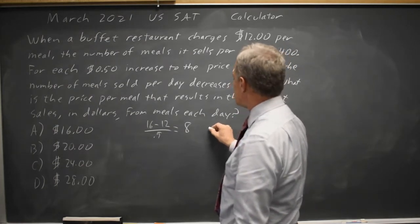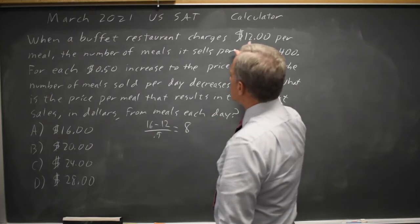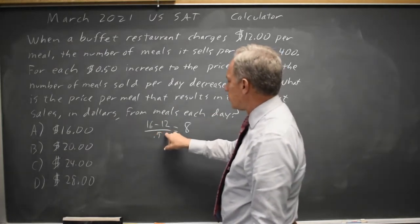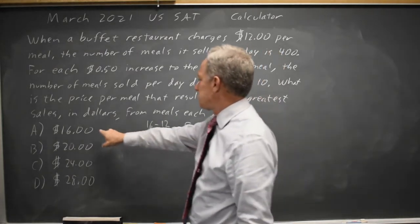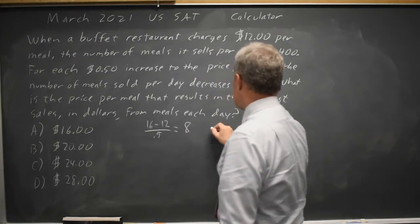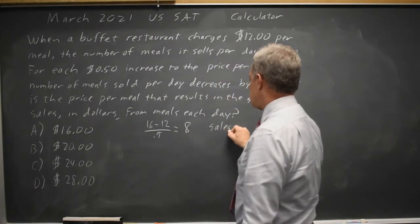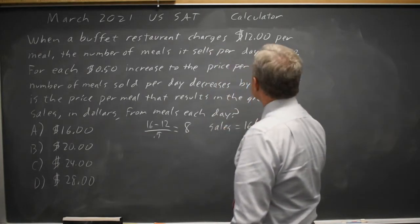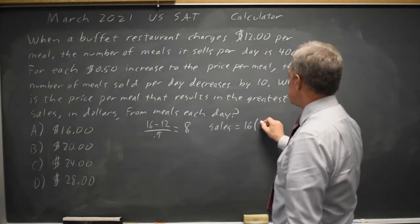So the sales are $16 price times 400 minus 80, which is 320 meals.